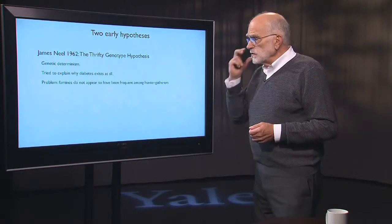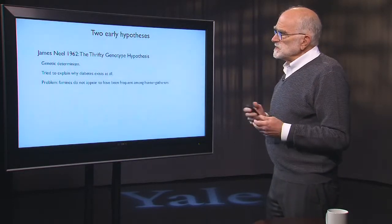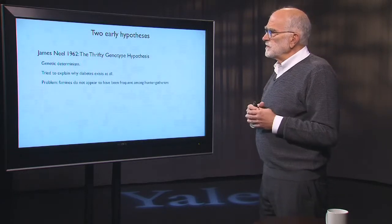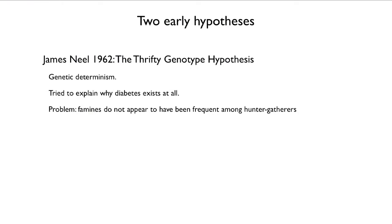There were two early hypotheses about this sort of thing. In 1962, Jim Neel came up with a thrifty genotype hypothesis. It was strictly genetic, and it tried to explain why diabetes exists at all. But there's a problem with it: hunter-gatherers don't encounter famines very frequently, so there probably wasn't significant selection for genes to handle starvation conditions.